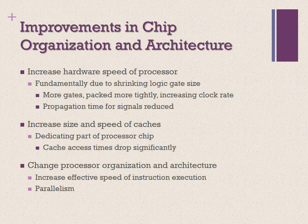As designers wrestle with balancing processor performance with that of main memory and other components, the need to increase processor speed remains. There are three approaches to achieving increased processor speed: first, increase the hardware speed of the processor — fundamentally by shrinking logic gate size, packing more gates, and reducing signal propagation time; second, increase the size and speed of caches by dedicating part of the processor chip; and third, change the processor organization and architecture to increase the effective speed of instruction execution.